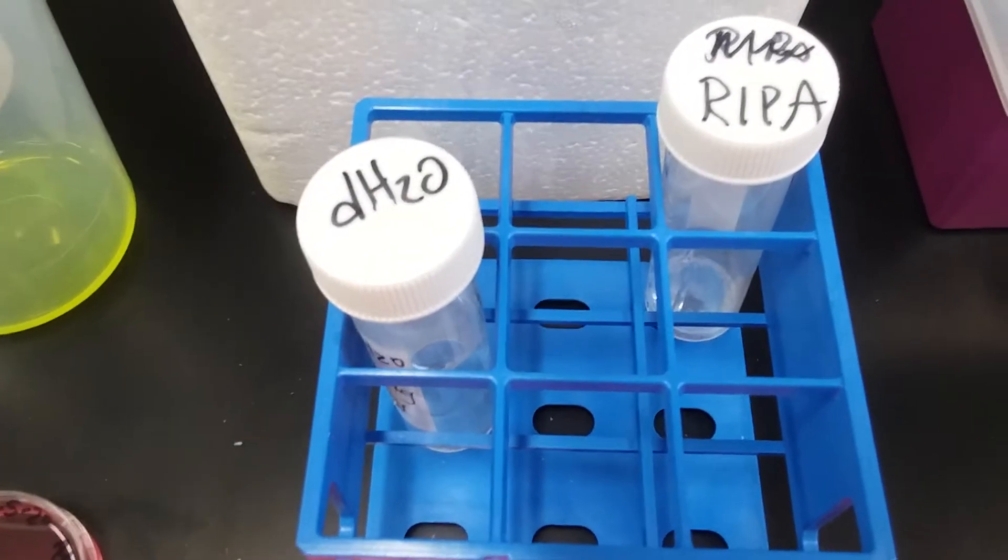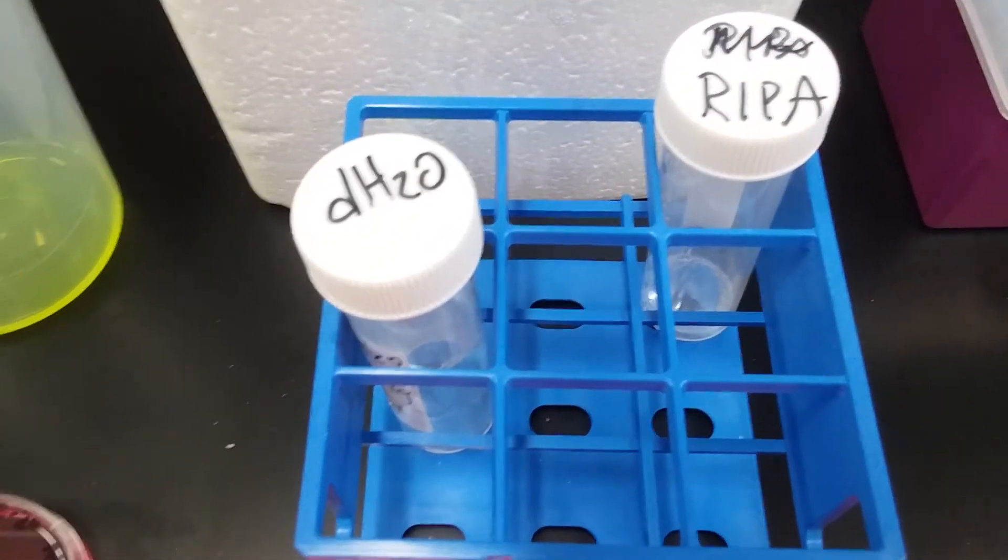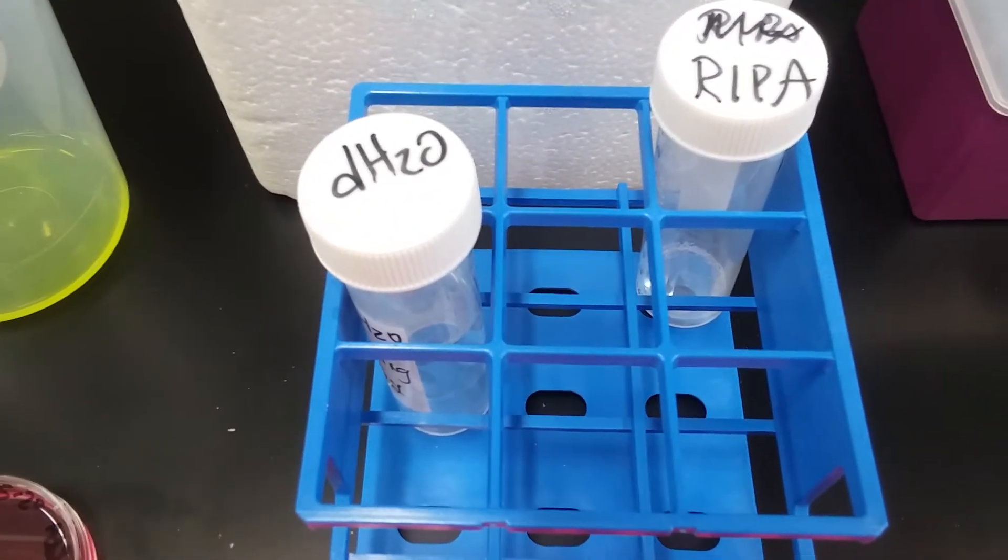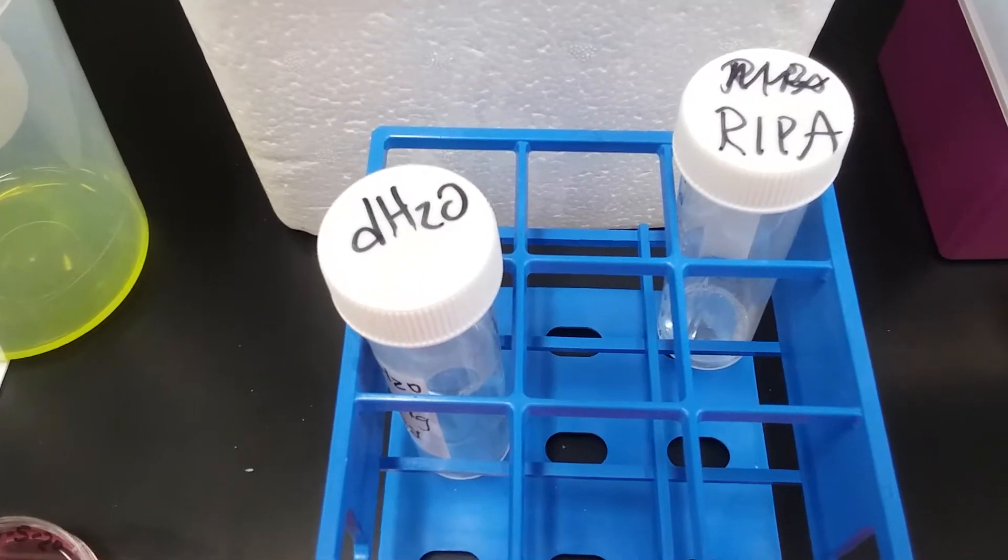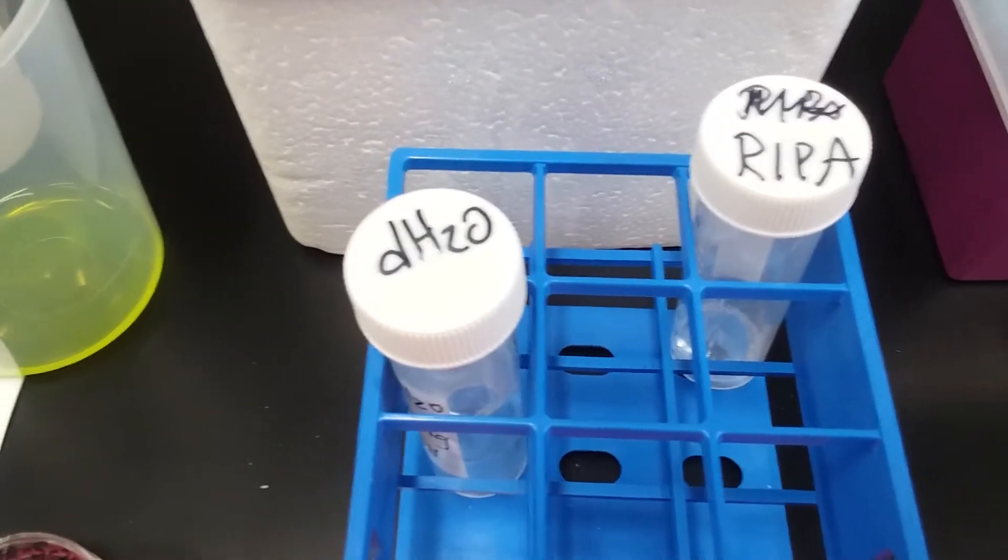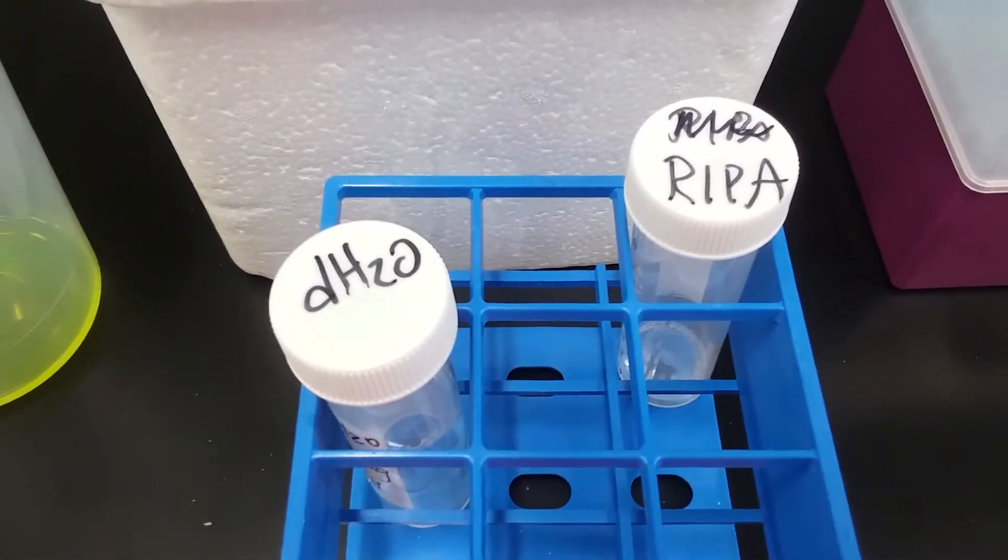So I liquid transferred 150 microliters of Tris, 30 microliters of SDS, 750 microliters of deoxycholic acid, 450 microliters of sodium chloride, and 30 microliters of Triton into the RIPA.